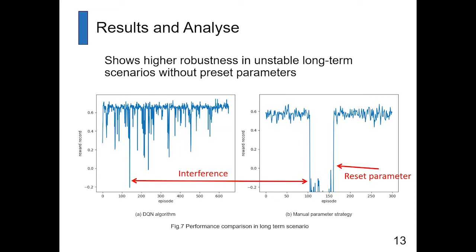Looking at Figure A and Figure B: Figure A shows the DQL network results and Figure B shows the manual parameter strategy results. We can see that when there is interference in our network, the DQL network shows higher robustness in unstable long-term scenarios without needing precise parameters, unlike the manual parameter strategy.